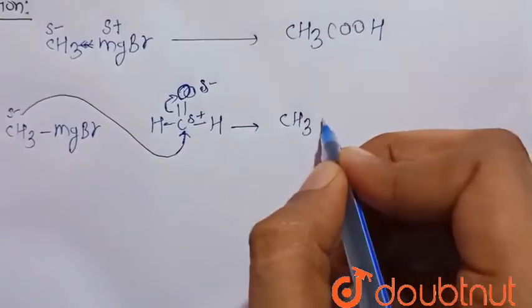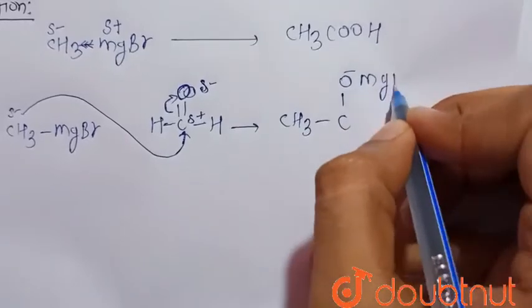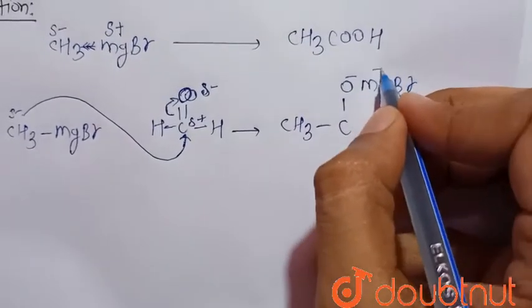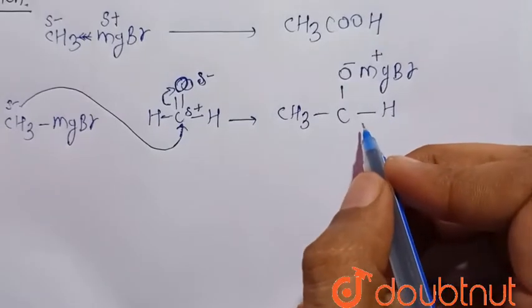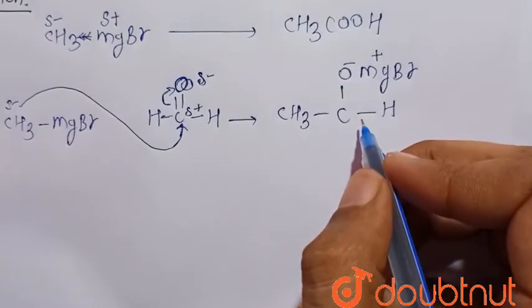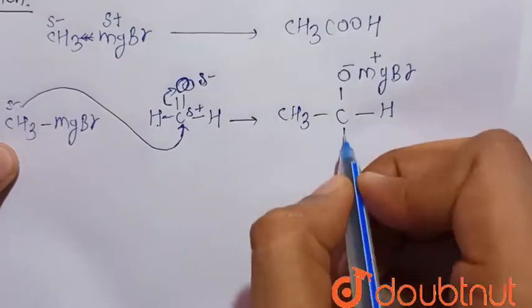There is the formation of this intermediate: CH3CO-MgBr with positive charge. And there are two hydrogens present.